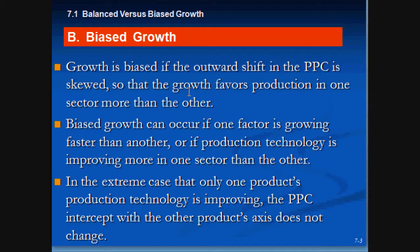Bias growth is growth in your possibility frontier which is skewed towards the sector you are more intensively using. To put it in simpler words, the growth favors production of one sector more than the other. So if you're using wheat and cloth, for example, if an enormous amount of laborers came into the manufacturing business, then you'll see your production possibility curve shift outward in your cloth sector, but not shift outward as much — or at all — in your wheat sector. Bias growth can occur if one factor is growing faster than another, or if technology is improving for one sector faster than the other.